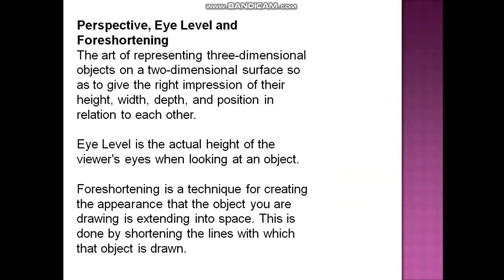Perspective, eye level, and foreshortening. Perspective is the art of representing three-dimensional objects on a two-dimensional surface so as to give the right impression of their height, width, depth, and position in relation to each other. Eye level is the actual height of the viewer's eyes when looking at an object. Foreshortening is a technique for creating the appearance that the object you are drawing is extending into space, done by shortening the lines with which the object is drawn.